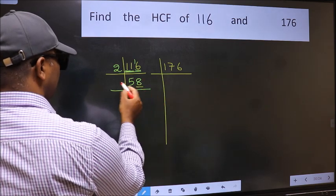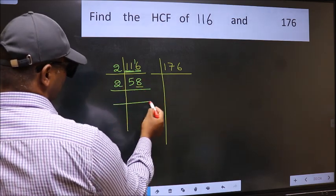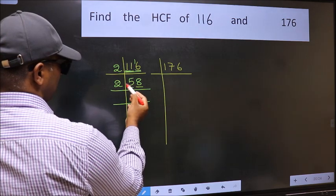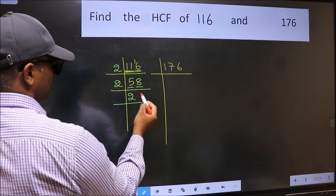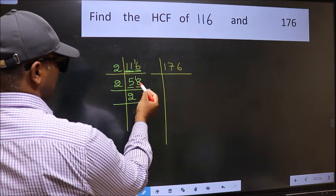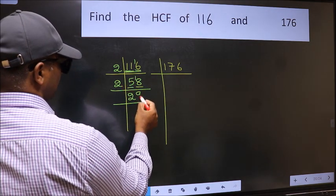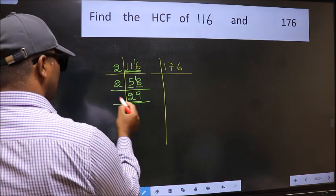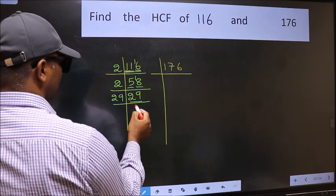Last digit 8, even, so take 2. First number 5, a number close to 5 in 2 table is 2×2=4. 5-4=1, 1 carried forward 18. When do we get 18 in 2 table? 2×9=18. 29 is a prime number, so 29×1=29.